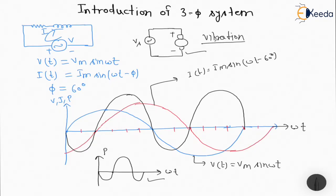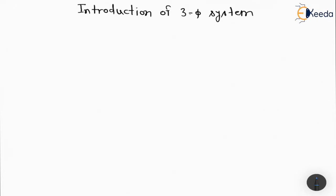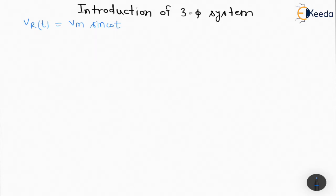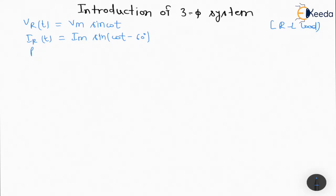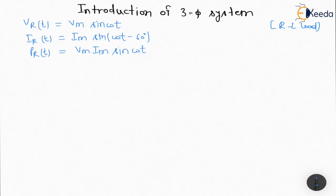So now we are going to see the three-phase condition. The problem with single-phase is that the power varies at every point, causing vibration in the load. Now let us assume a three-phase load. If V_R(t) = Vm sin(ωt) with the same RL load and φ = 60°, then I_R(t) = Im sin(ωt − 60°). So P_R(t) = Vm sin(ωt) · Im sin(ωt − 60°). This is equation one.